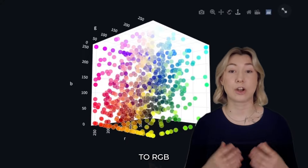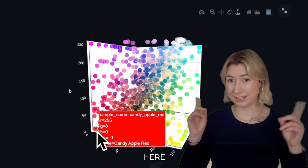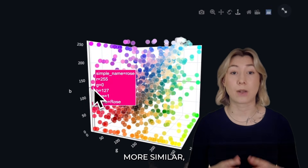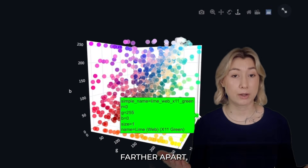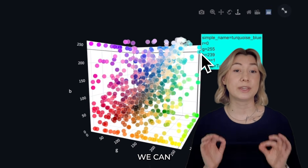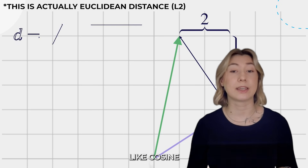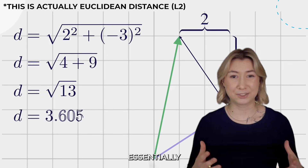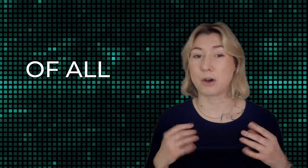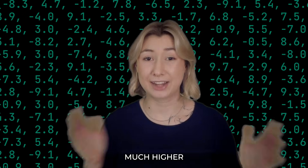This works similarly to RGB color codes, actually. You can see here the colors closer to one another are more similar, but when we get farther apart they're more different. We can mathematically calculate the similarity using methods like cosine similarity. This is essentially the basis of all vector search applications, except with much higher dimensional vectors.